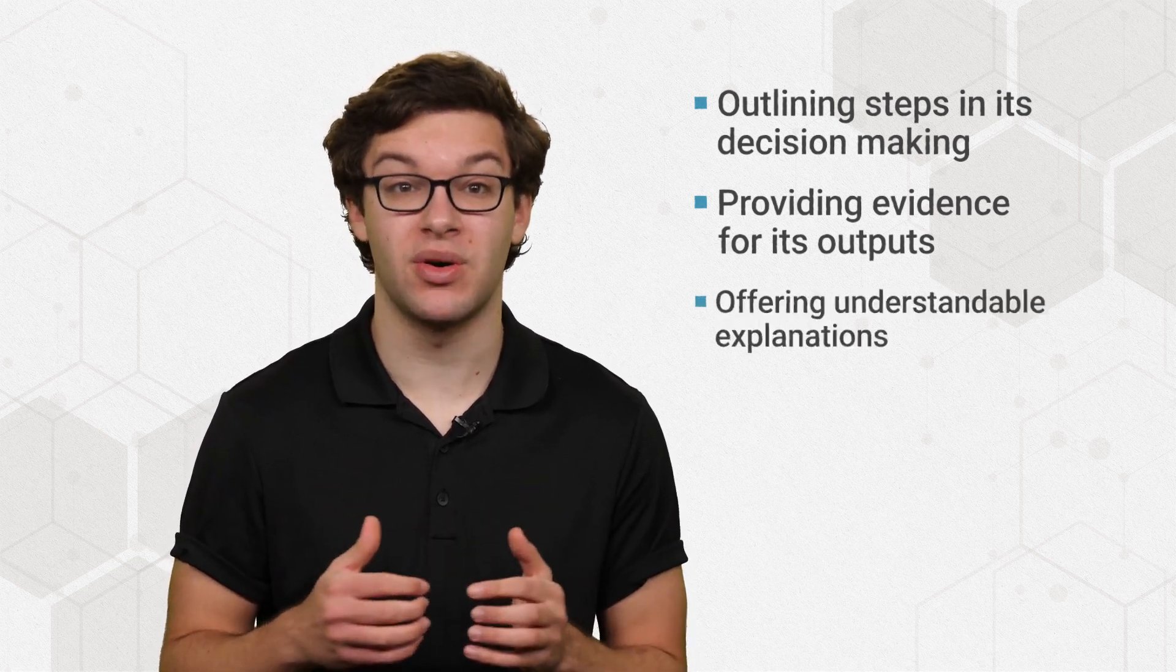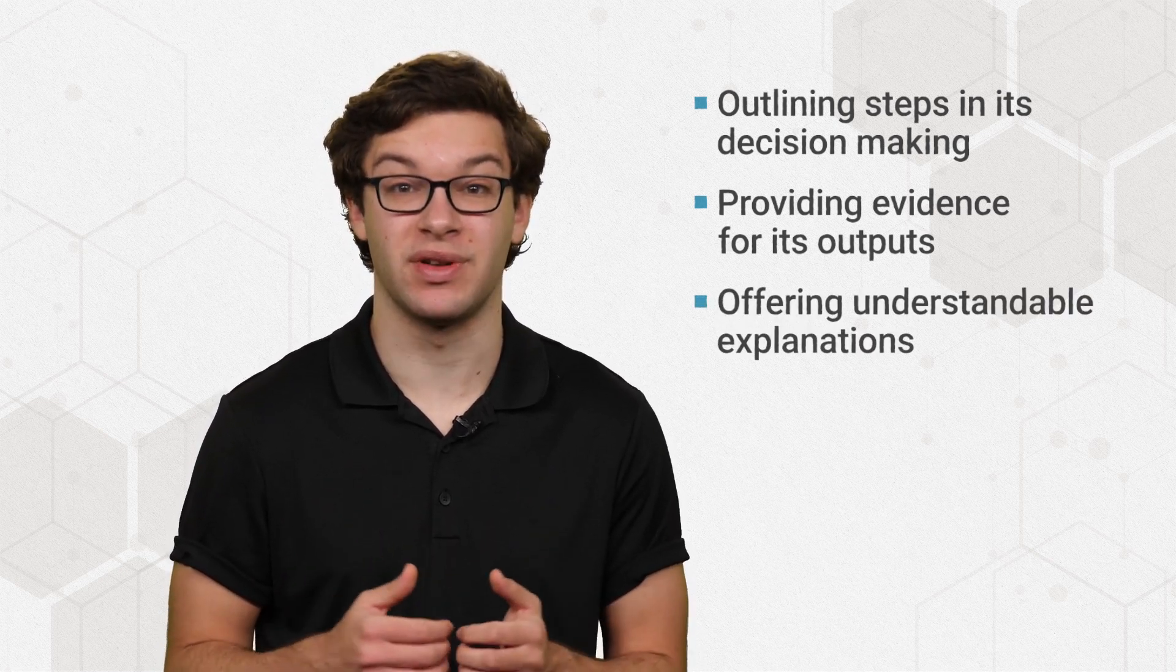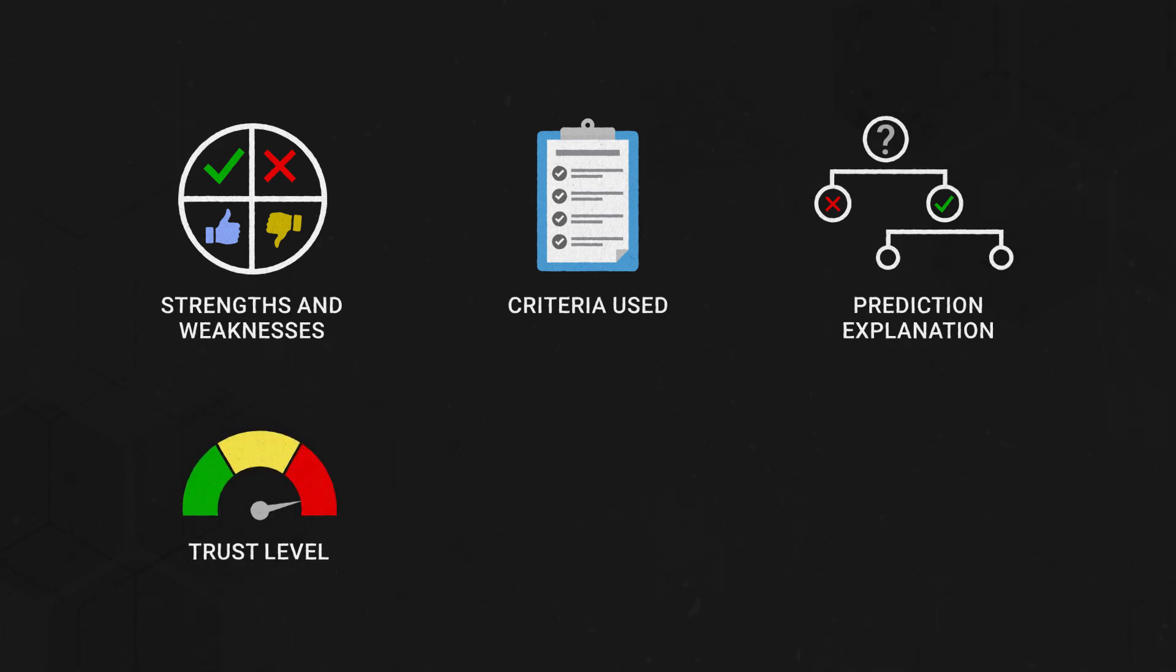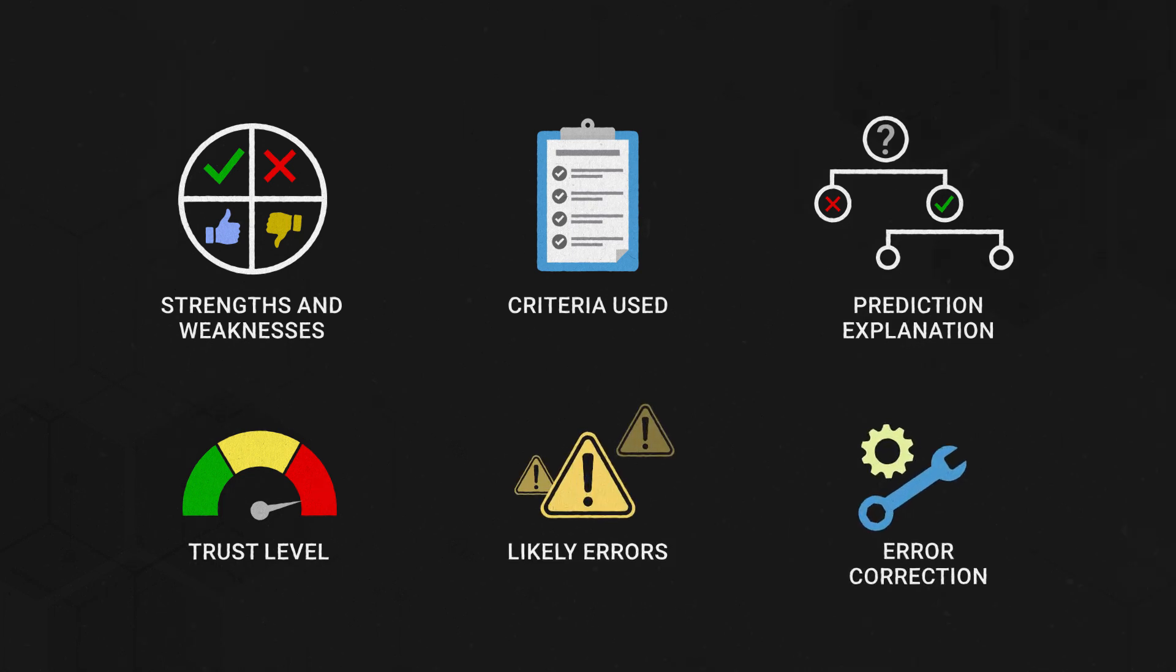And truly explainable models also offer explanations that are understandable for less technical audiences. Explainable AI provides information like the program's strengths and weaknesses, the specific criteria that AI uses to arrive at a decision, why a program makes a particular prediction, the level of trust for different decisions or predictions, the types of errors the program is likely to make, and how errors can be corrected.